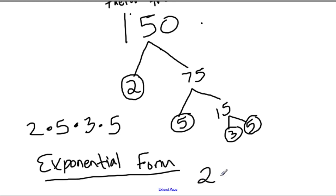2, so just write 2 times 3. And then there's two 5s, so we write times 5 to the second power. And this is what the prime factorization of 150 would look like in exponential form.